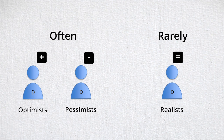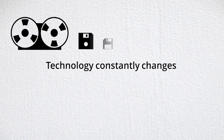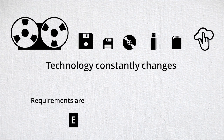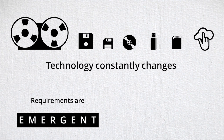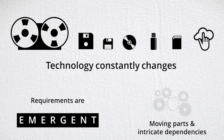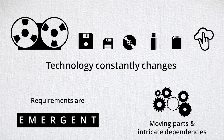I don't even need to back this assertion up with statistics because I am confident that anyone watching this video will agree. In addition, especially in the world of software, there are numerous unknowns. Technology constantly changes and requirements are emergent. There are many moving parts, as well as intricate dependencies between tasks and between people. And that's not even throwing in external environmental factors.